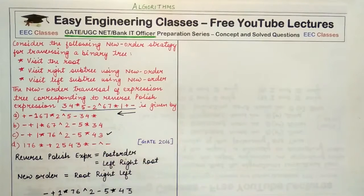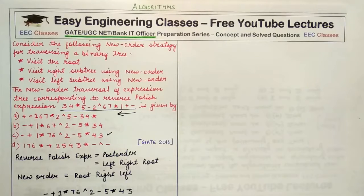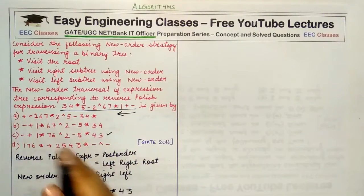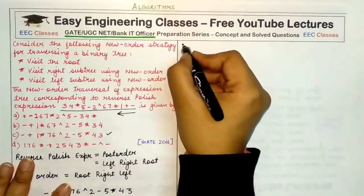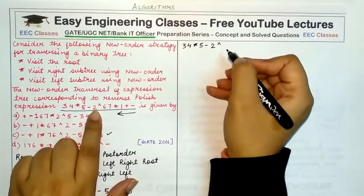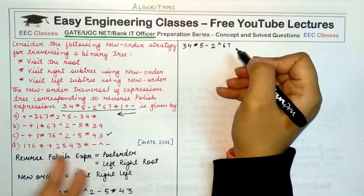If this trick does not strike you during the exam, you can solve it using the longcut method. The given post-fix expression first needs to be converted into an infix expression. In post-fix notation, the operator is written at the end of two operands. Starting from the left, the first two operands are 3 and 4 with operator *, giving infix 3 * 4. We write the remaining expression as-is and convert further as we move along.